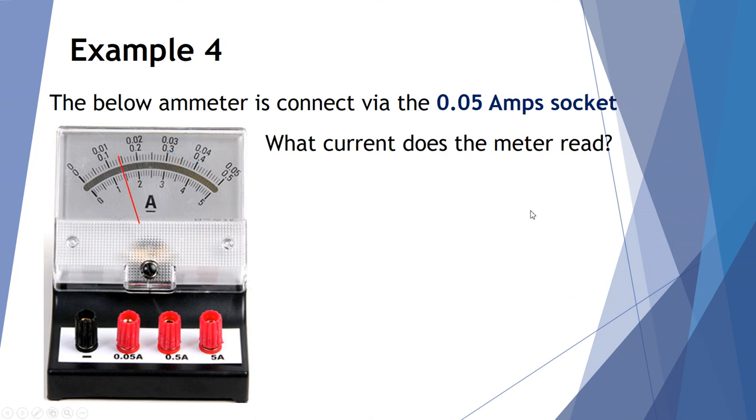And finally, another ammeter measurement. We're looking at the 0.05 socket. 0.05, which is the top scale. Can you calculate what current that would be?